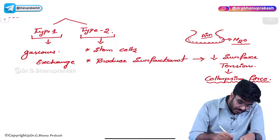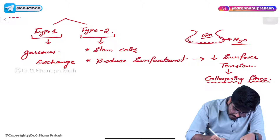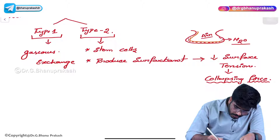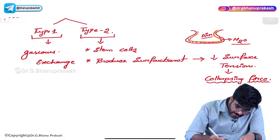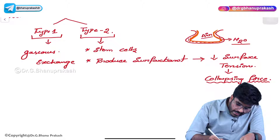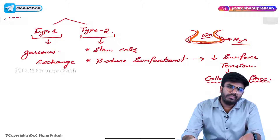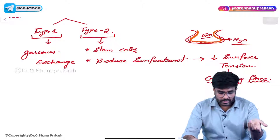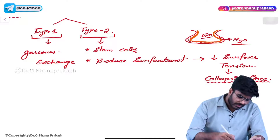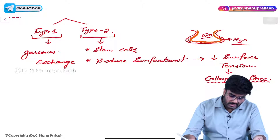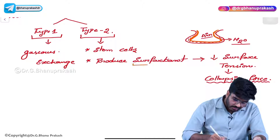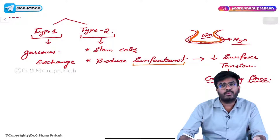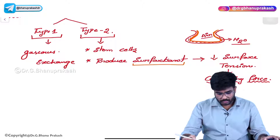Surfactant is like a lipid and acts like an oil layer. It comes between the air and water, preventing them from meeting, so surface tension does not develop. The collapsing force is reduced because of surfactant, and surfactant is produced by Type 2 pneumocytes.